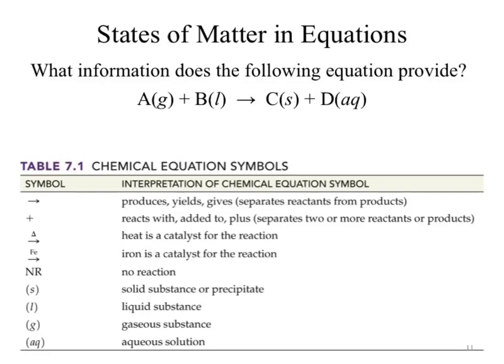You might see a little delta written above your reaction arrow. What does delta represent? Change — in this case, it represents the addition of heat to the reaction. The delta always signifies an addition of heat. You might also see another symbol written over the arrow, such as Fe (iron). Why is iron written over the arrow? It is helping the reaction to occur. Something written over the arrow to help the reaction happen is referred to as a catalyst.